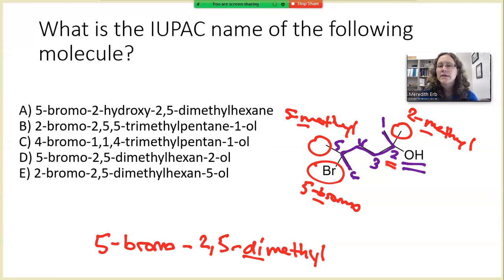And then lastly, we're going to add in the parent chain that includes the alcohol. So the parent chain is a hexan. And then at the end, we can indicate where the alcohol is located. And we know it's on the two position. It's important to have that two so we know where the alcohol is on the parent chain.